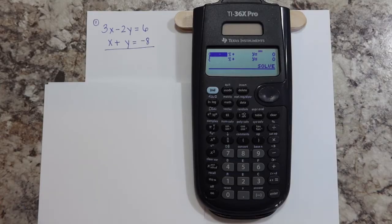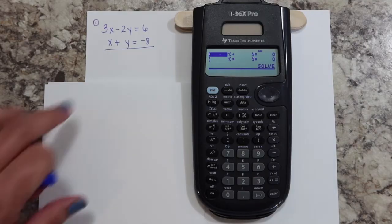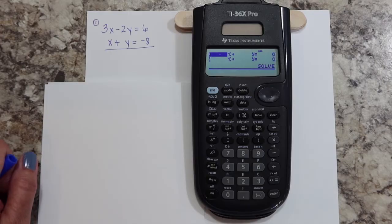This pulls up a menu that looks like this. We need to enter just the coefficients of X and Y and then the constant term on the other side.